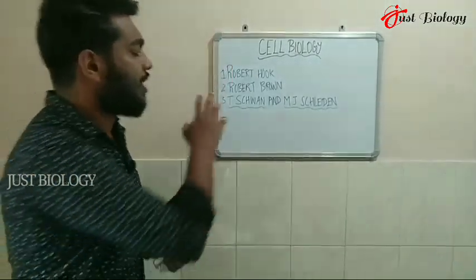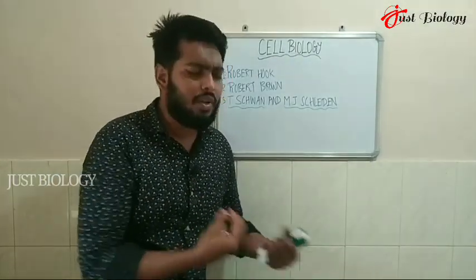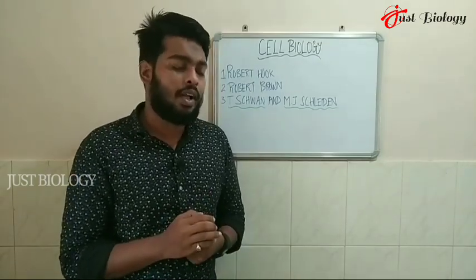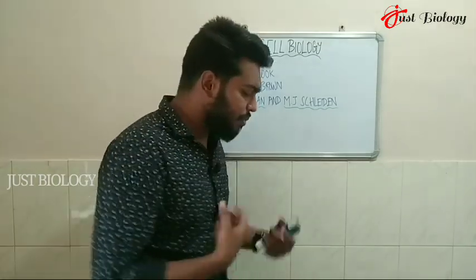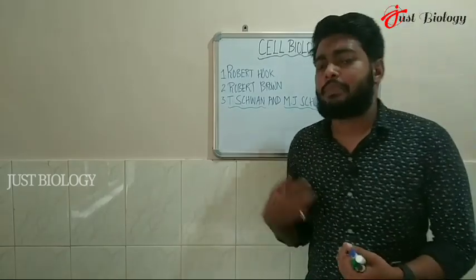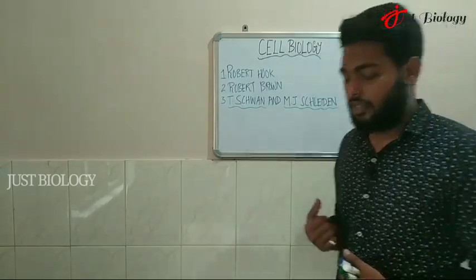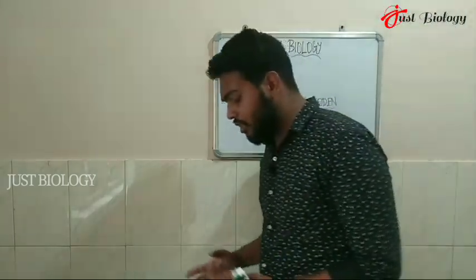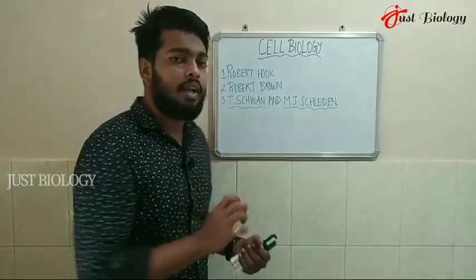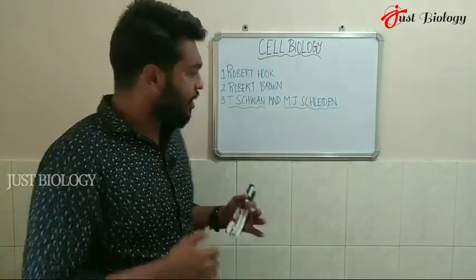Robert Hooke discovered the cell using a simple microscope. He was able to find that the cell appears as a honeycomb structure. This was the first discovery of the cell, made by Robert Hooke.